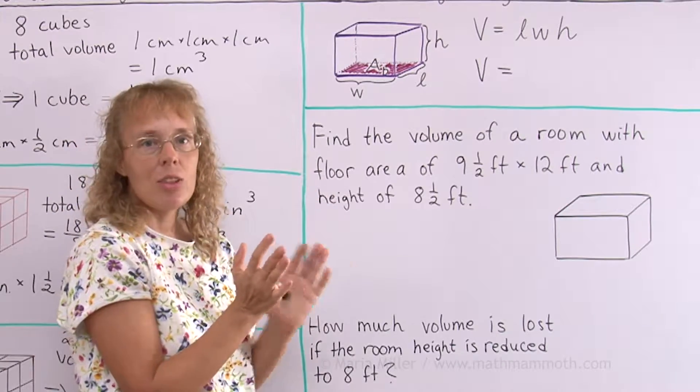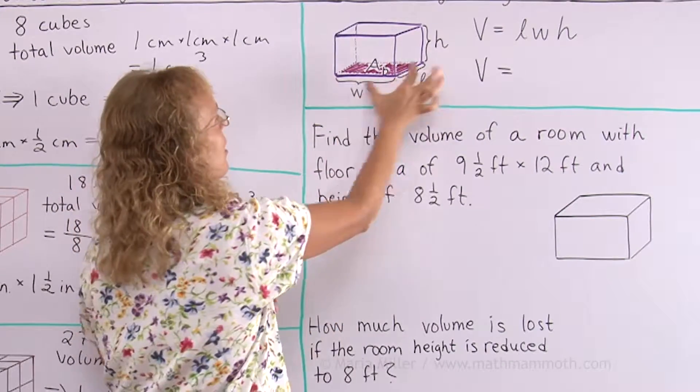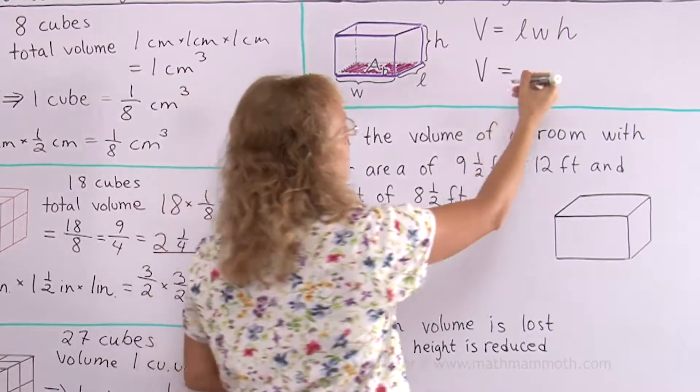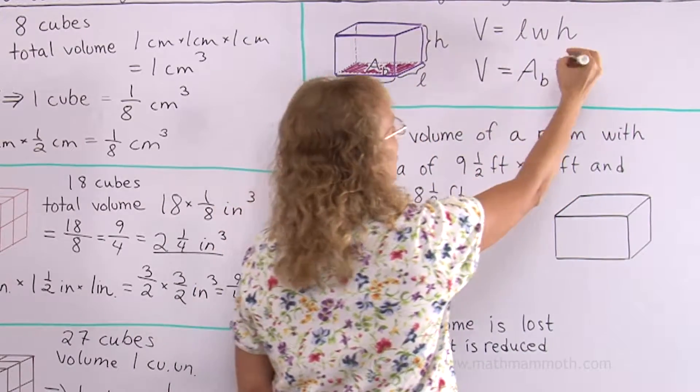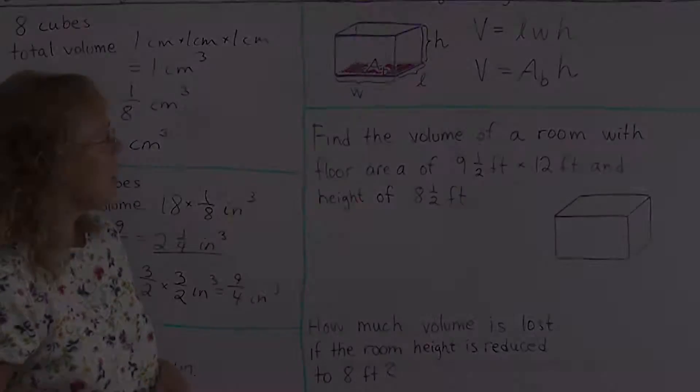The area of the bottom. The bottom is a rectangle, so you find its area by multiplying these two. So I can write another form of the same formula. You can take these two as the area of the bottom, times height.